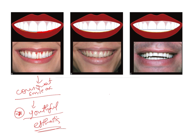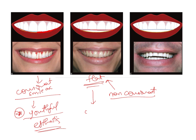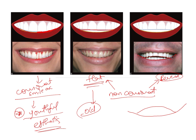If the curvatures of the incisal edge and lower lip do not match, it is a non-consonant smile arc. This can be flat — where all incisal edges are at the same level — giving an old appearance typically seen with attrition in elderly patients. The second type is a reverse smile arc, where the curvature of the incisal edges goes in the opposite direction to the curvature of the lower lip.